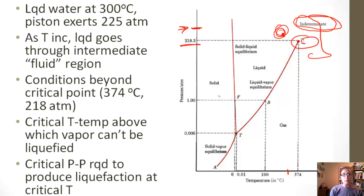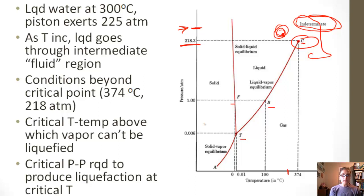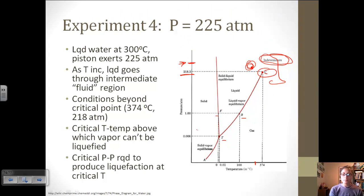Some things you're going to want to remember to be able to identify are the critical point, the triple point, the normal boiling point, and the normal melting point. Then which area is solid, liquid, and gas, and also where sublimation occurs. Given a blank one of these, you should be able to identify all of those points for water.